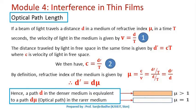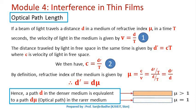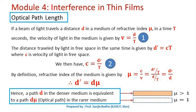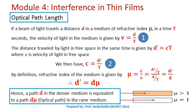While writing the conditions for constructive interference and destructive interference, we have mentioned optical path difference. For constructive interference, this optical path difference is an integral multiple of lambda, and for destructive interference, this optical path difference is an odd integral multiple of lambda by 2. What is this optical path difference?